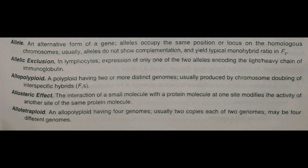Usually alleles do not show complementation and typically show monohybrid ratio in F2. For example, jab hum log tall ke liye baat karte hain - capital T capital T, capital T small t - toh ek single capital T allele hota hai.